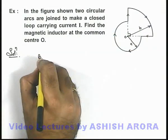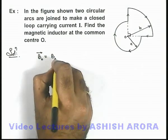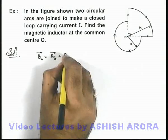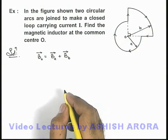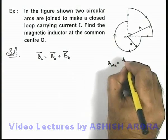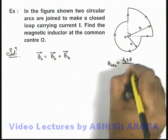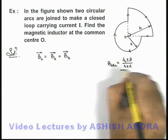So we can write magnetic induction at O will be due to the magnetic induction of radius a plus magnetic induction due to the one which is of radius b. For an arc we know it is given as μ₀ i θ by 4π r, if r is the radius and θ is the angle subtended by the arc.